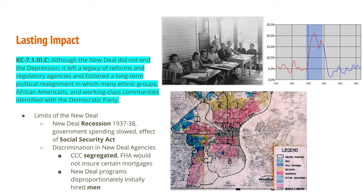Although the New Deal did not end the Depression, it left a legacy of reforms and regulatory agencies and fostered a long-term political realignment. The country even experienced a small recession within the Great Depression — visible in an unemployment spike in 1937 and 1938 — likely due to a slowdown in government spending and the effect of Social Security payroll deductions taking money out of workers' paychecks.